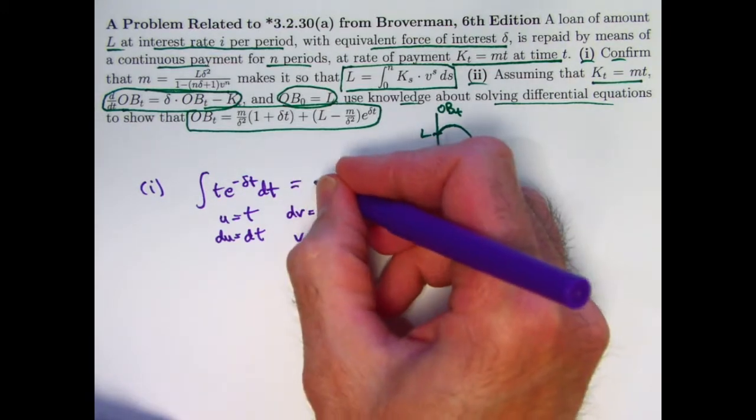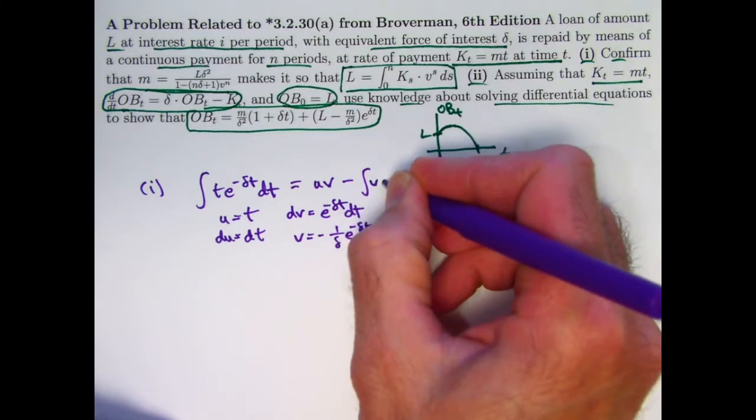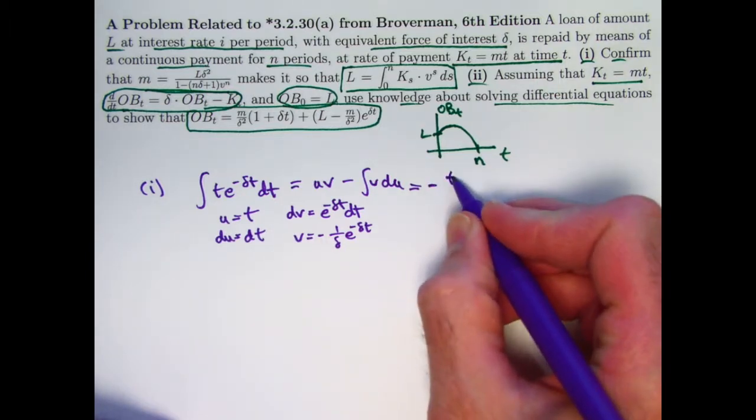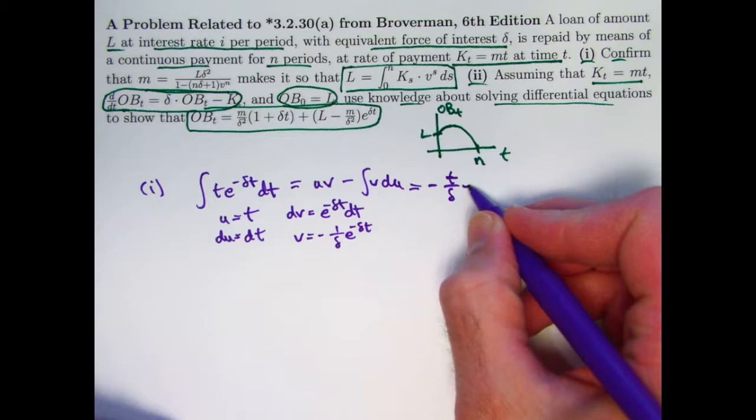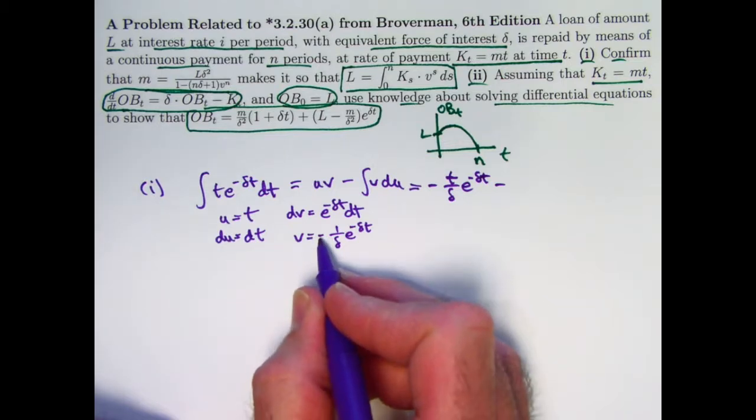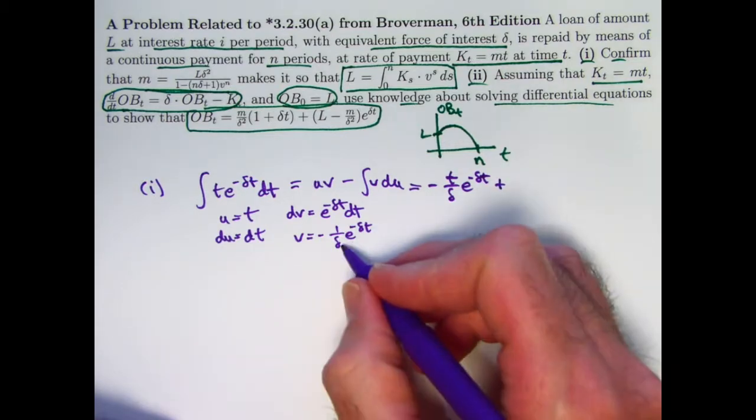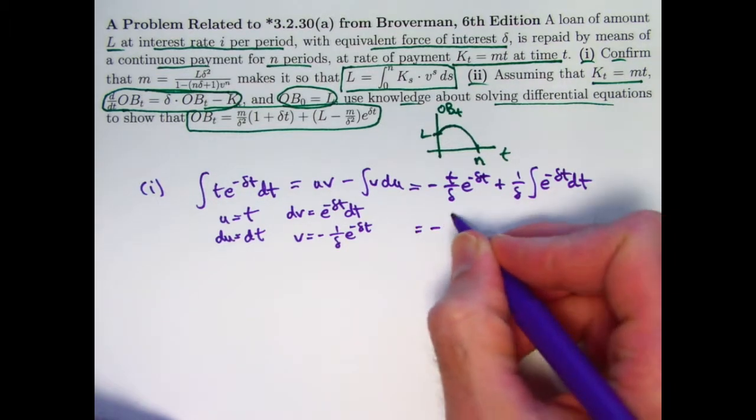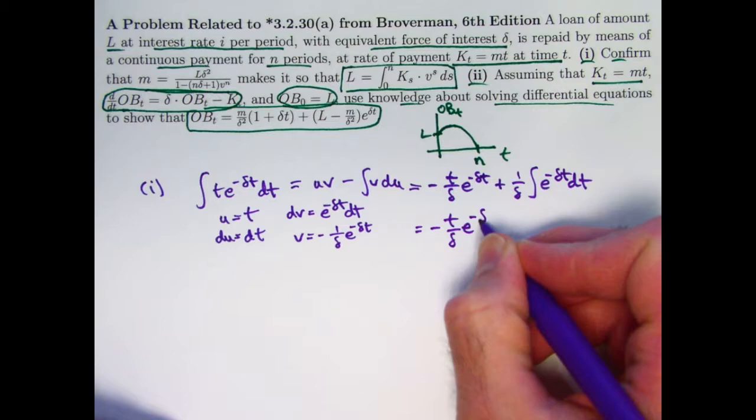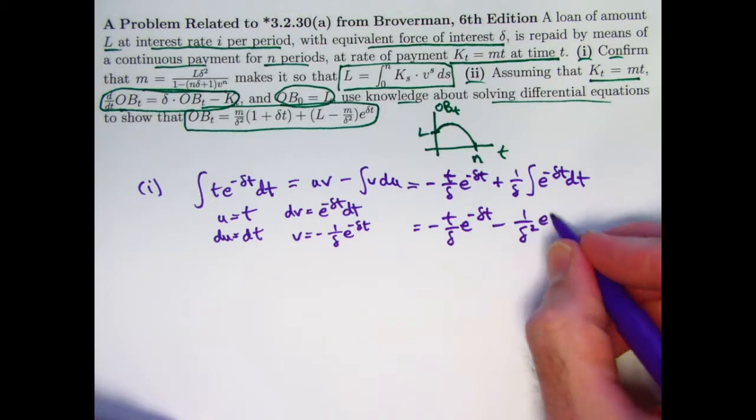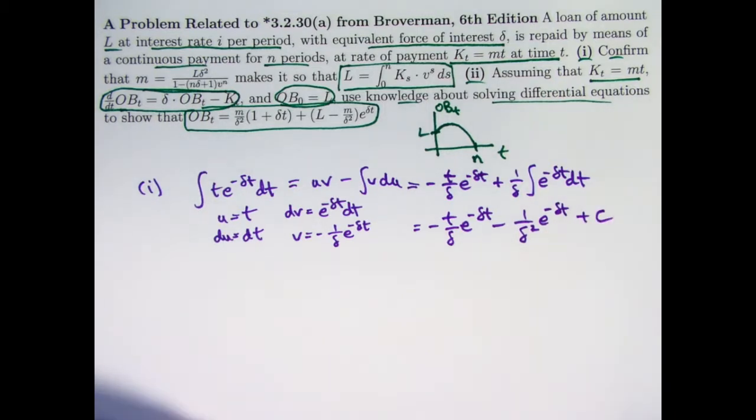The integration by parts formula is U times V minus the integral of V dU. And so this becomes negative T over delta E to the negative delta T minus the integral of the product of these two things. The minus sign there and the minus sign here make a plus. I can bring this 1 over delta in the front times the integral of E to the negative delta T. And doing that second integral gives another minus sign and another factor of 1 over delta. So I get minus 1 over delta squared E to the negative delta T plus C for your general antiderivative.